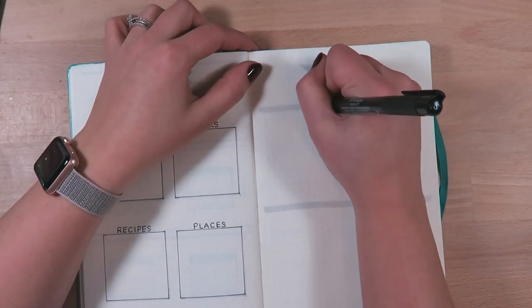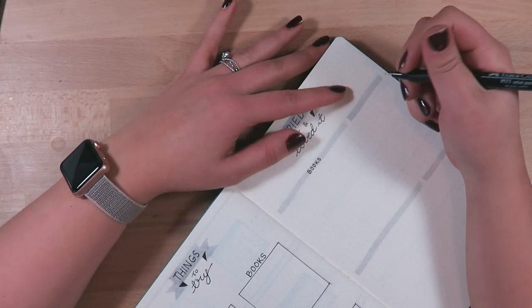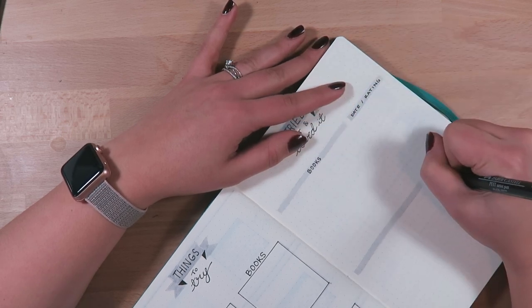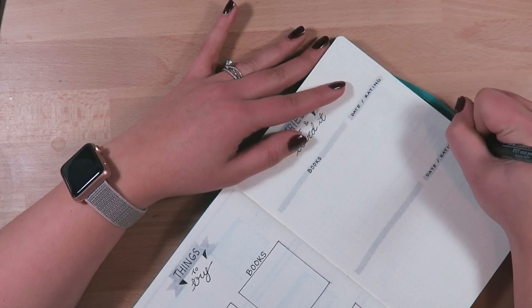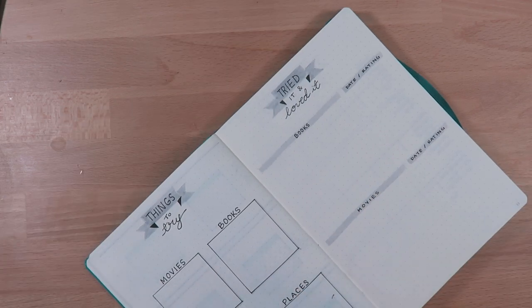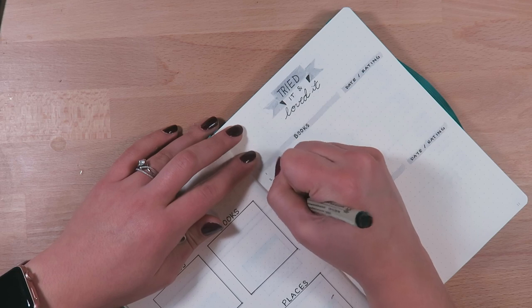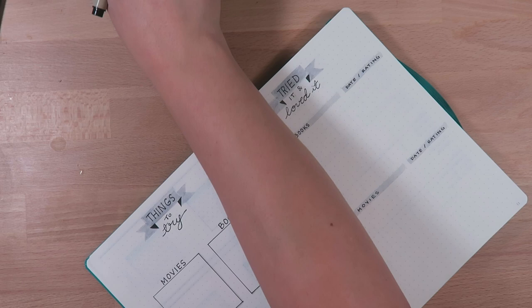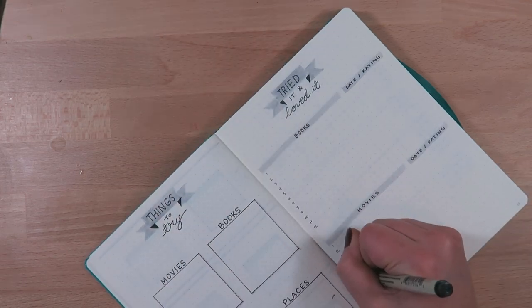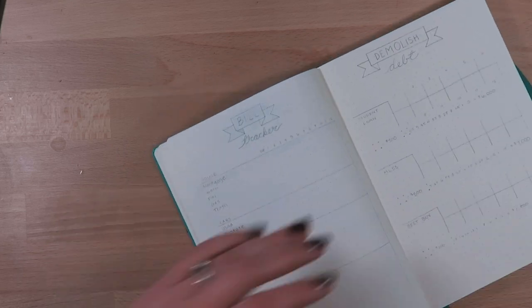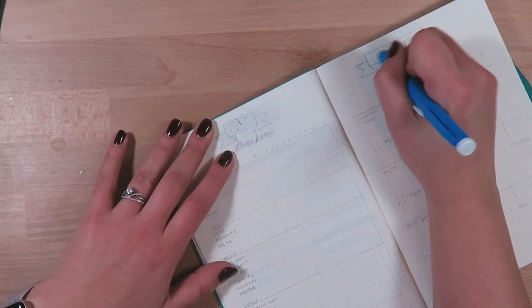For the page opposite of my things to try I did a tried it and loved it page and I just picked two sections for books and movies and I just numbered one through twelve, so one for every month. That is my goal for this year, is to read twelve books, one a month would be awesome. And then these last two pages here are the last two in my spread and they are probably my most used.